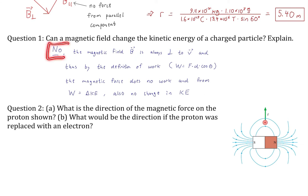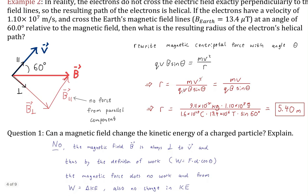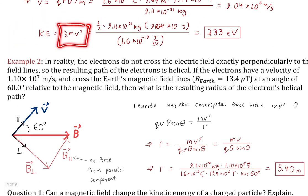Another force we've seen that does no work is the centripetal force — whether due to gravity or tension. Any centripetal force does no work on the object. The magnetic force is a really fascinating natural force: it's naturally a centripetal force and never does work, thus never changes the kinetic energy of the charged particle. It's just changing the direction of the charged particle — kinetic energy isn't dependent on direction, only on speed.